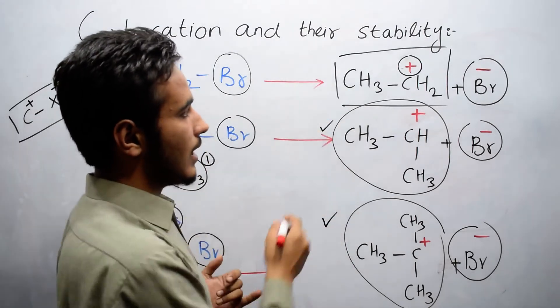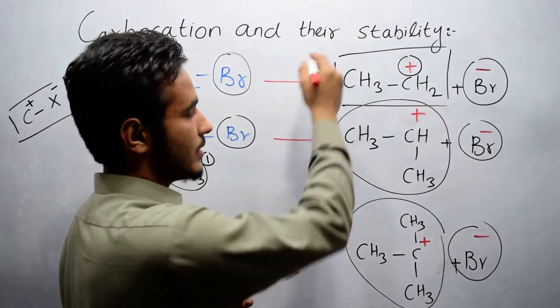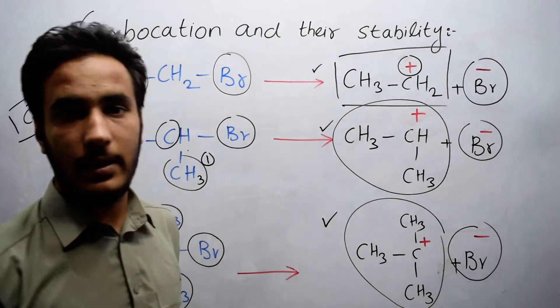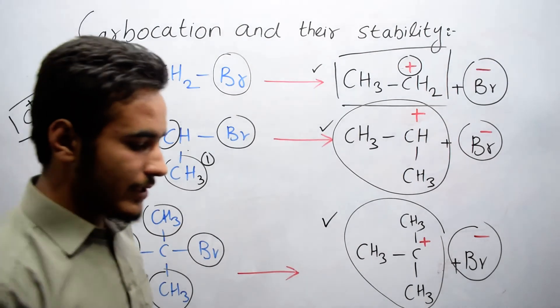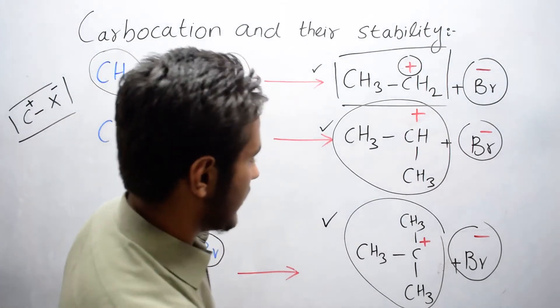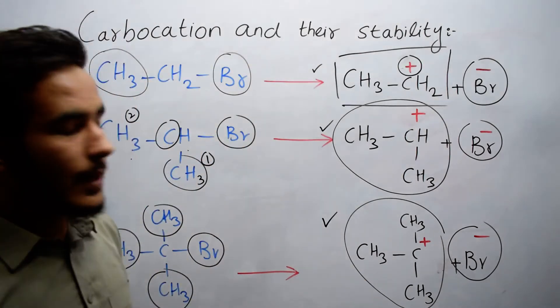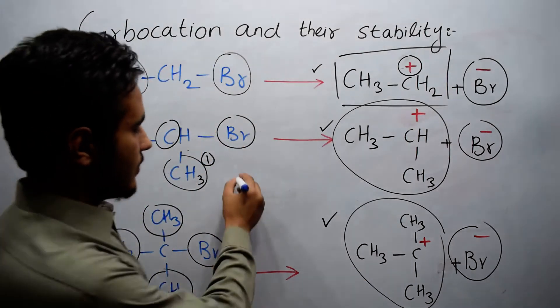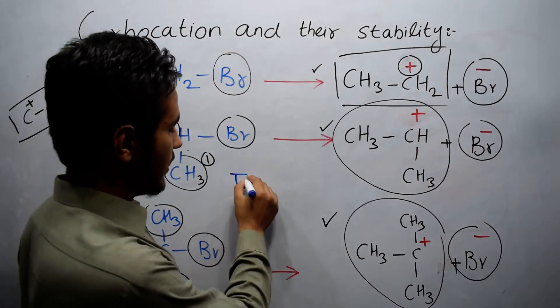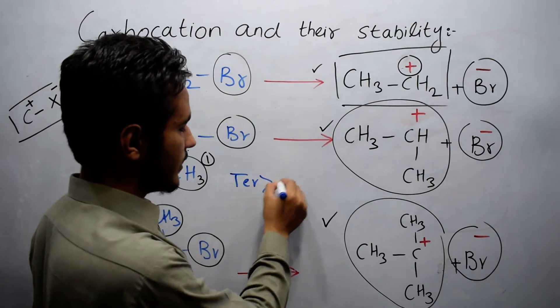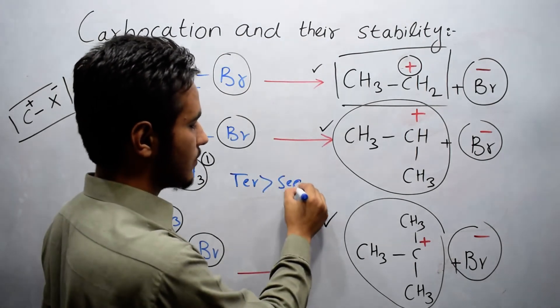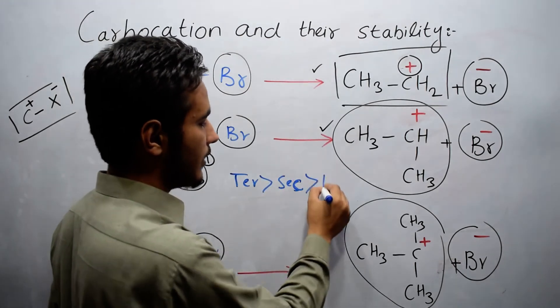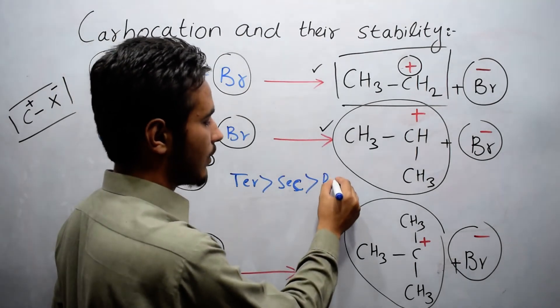Now we will look at the stability: whether tertiary, secondary, or primary carbocation is more stable. Tertiary carbocation is more stable than secondary, and secondary is more stable than primary carbocation.